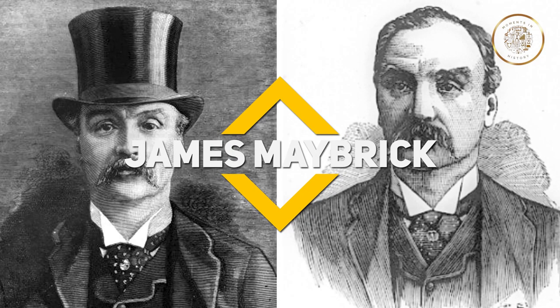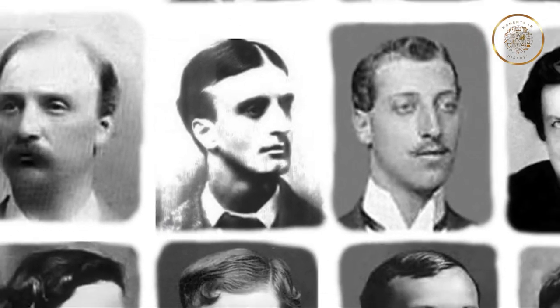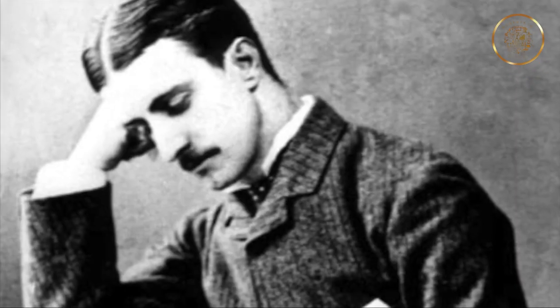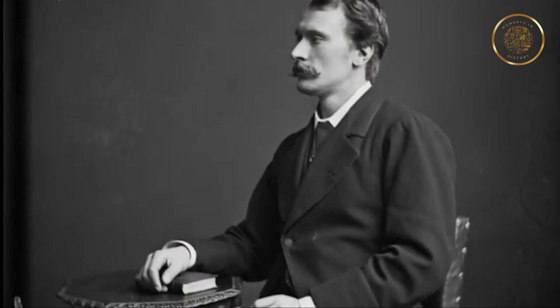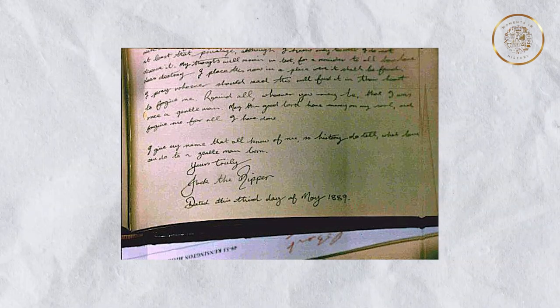Theory 4: James Maybrick. James Maybrick, a wealthy cotton merchant from Liverpool, emerges as a controversial figure amidst the myriad suspects associated with the Ripper murders. Far removed from the squalor of Whitechapel, Maybrick lived a seemingly charming life, yet beneath his polished façade lay a dark secret. The evidence supporting Maybrick as a potential suspect is intertwined with a sensational discovery: in 1992, a diary purportedly written by Maybrick himself came to light, containing chilling confessions and detailed accounts of the Ripper's crimes.